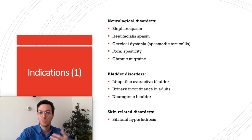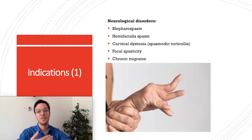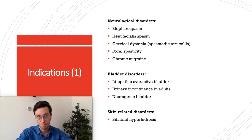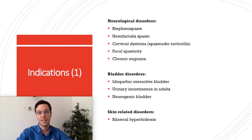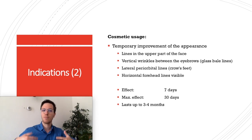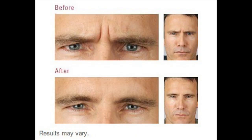What are the indications for Botulinium? It can be used in several neurological disorders, among which hemifacial spasm, cervical dystonia, vocal spasticity, and chronic migraine. It can also be used in bladder disorders, for example idiopathic overactive bladders, urinary incontinence in adults, and neurogenic bladders. Lastly, it can be used in skin-related disorders such as bilateral hyperhidrosis, and most famously, Botox is used for cosmetic purposes.